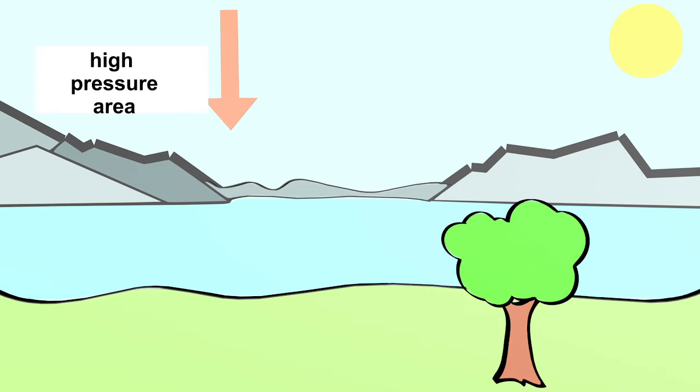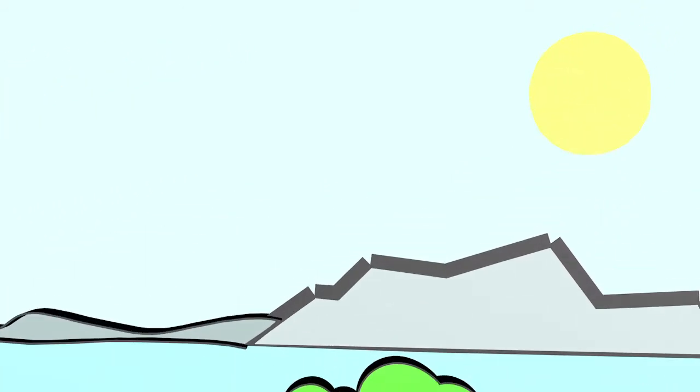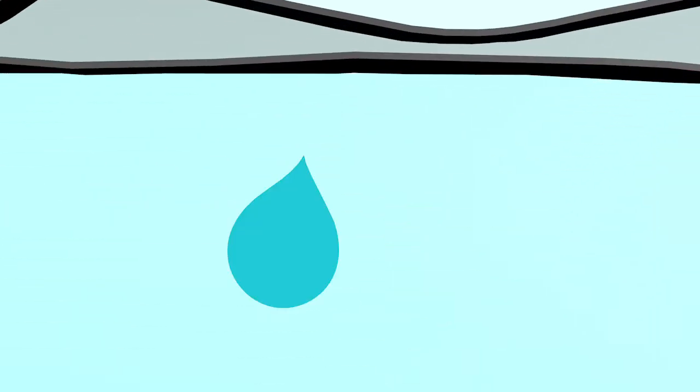In a low-pressure area, the air moves upwards. How do clouds come about? To do this, we need the energy that the sun supplies. For example, the sun warms the water of a lake. With the energy of the sun, water evaporates into invisible water vapor. This water vapor rises into the low-pressure area. The temperature of the air decreases with increasing altitude. At some point, the invisible water vapor condenses into small water drops, and a cloud forms.